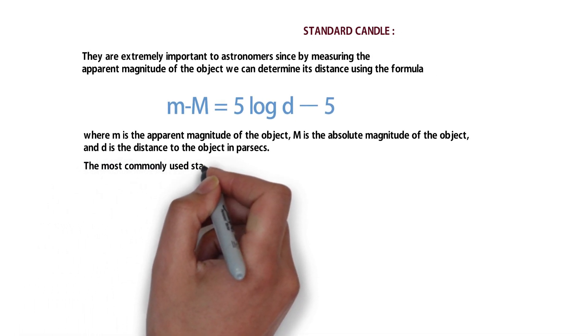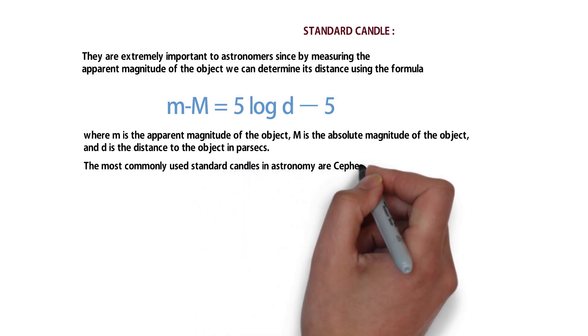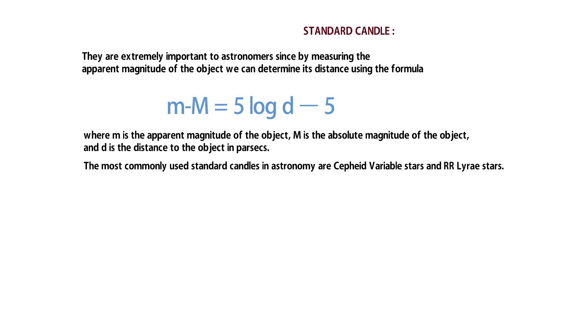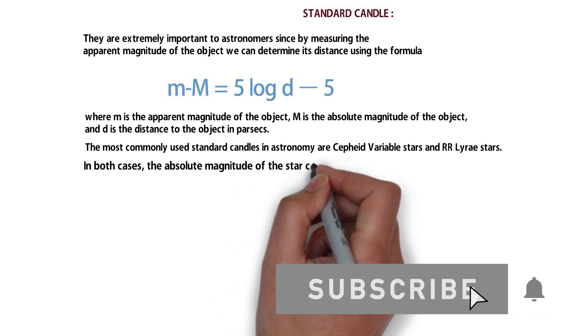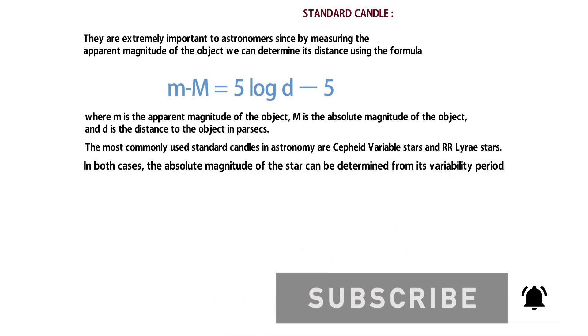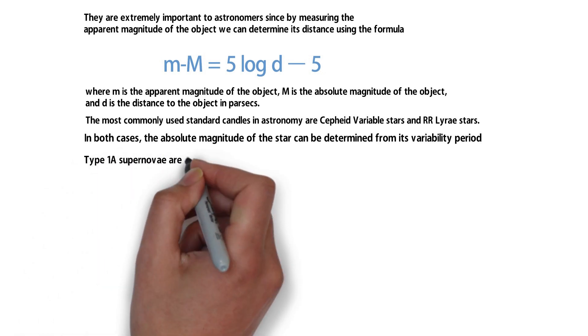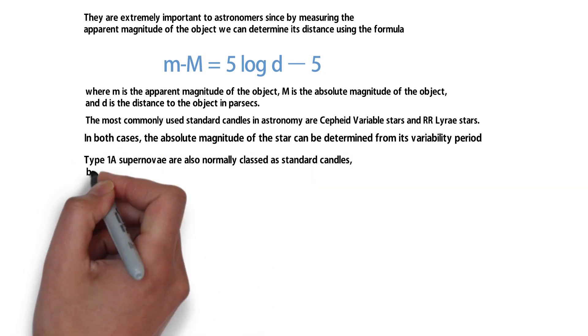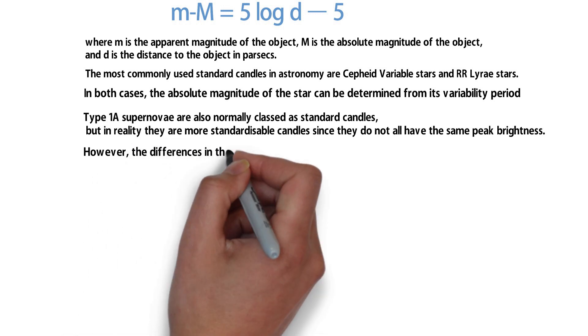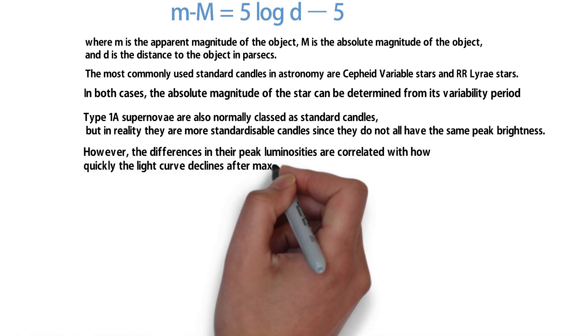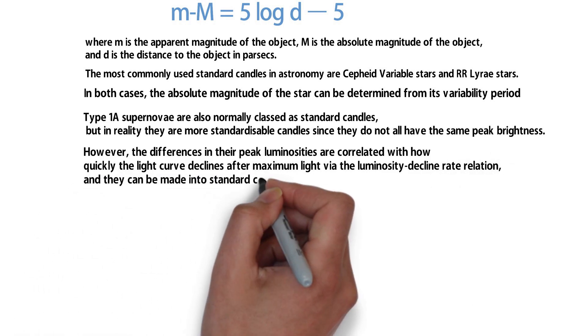The most common standard candles used are Cepheid Variable stars and RR Lyrae stars. In both methods, we can determine the absolute magnitude. Type 1a Supernovae are also used as standard candles because their peak brightness is equal and well-known. The difference between observed brightness and known brightness gives us the distance.